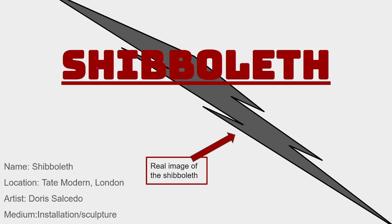The Shibboleth was an installation created by Doris Salcedo, created in 2007-2008, and located in the Tate Modern Museum in London.